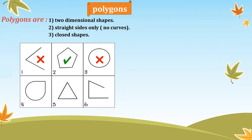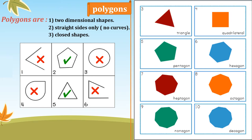Number five: yes, it's a polygon — 2D shape, straight sides, and closed. Number six: not a polygon because it's an open shape. Now here we have some polygons, and we want to count their sides and their vertices and learn their names.